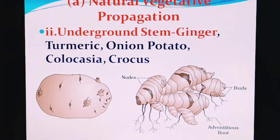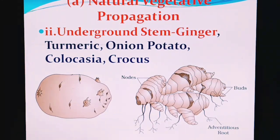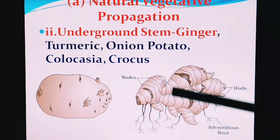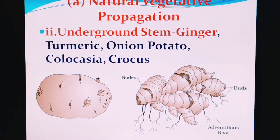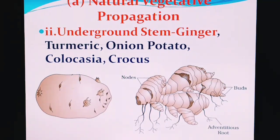Similarly, the underground stem is another example. Examples include ginger, turmeric, onion, potato, colocasia, and crocus. These are parts found under the soil, and they are actually stem — not roots. Because the stem possesses nodes and internodes, as you can see on the screen, we consider these as stem even though they are found underneath the soil. The plant uses these underground stem parts to create a new generation.